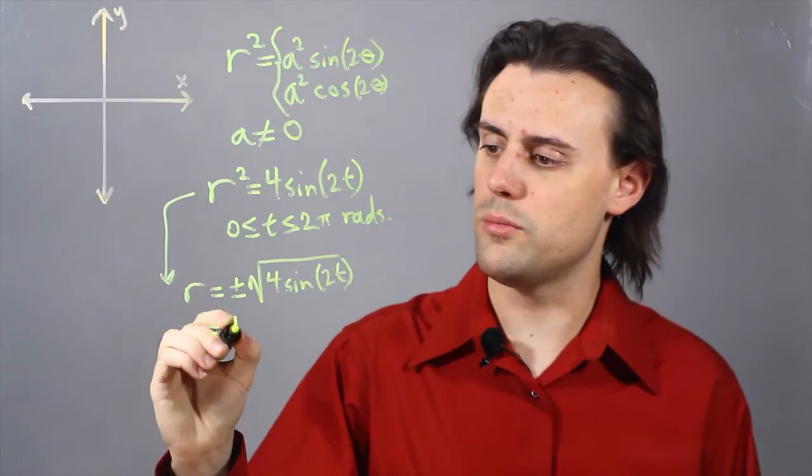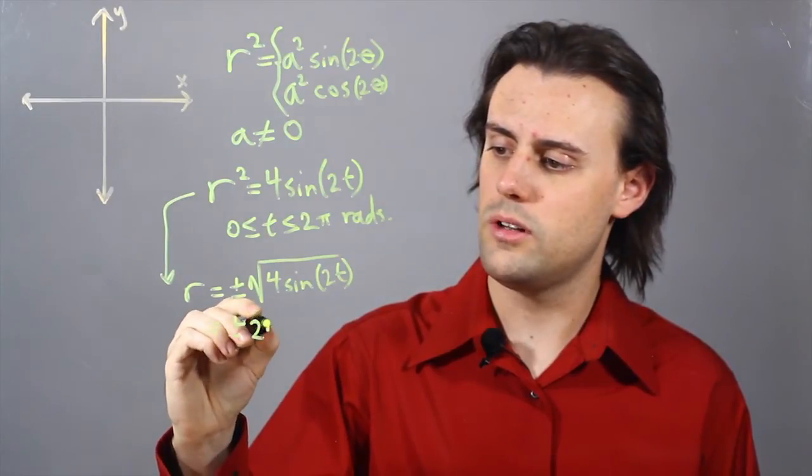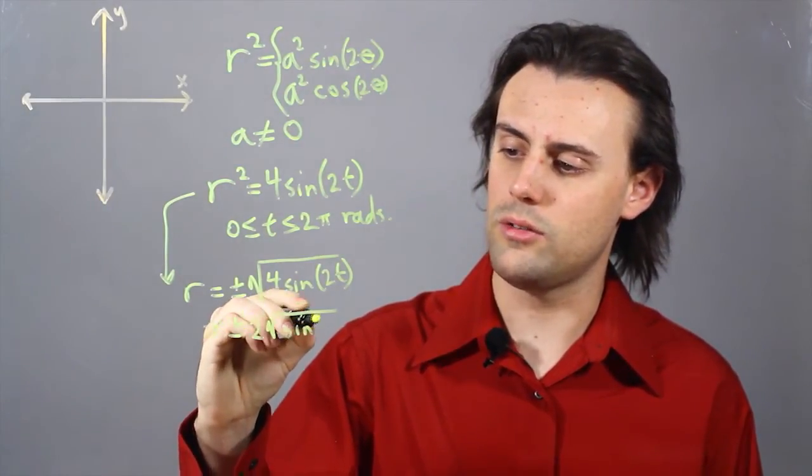And this is going to be equal to plus minus 2 times the square root of sine 2t.